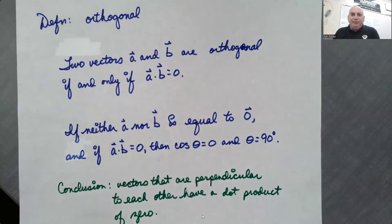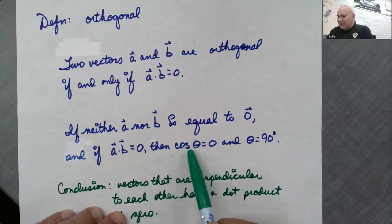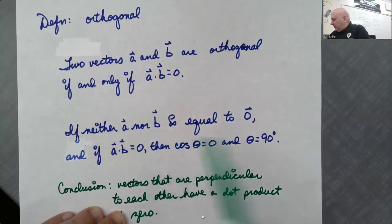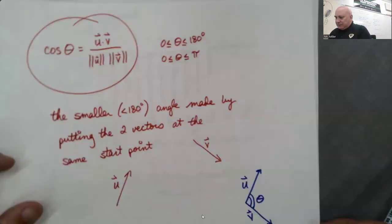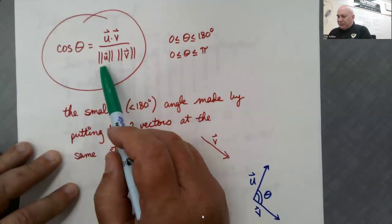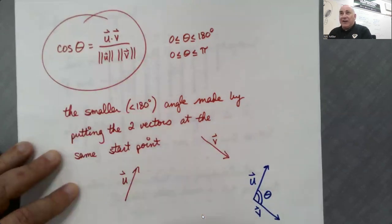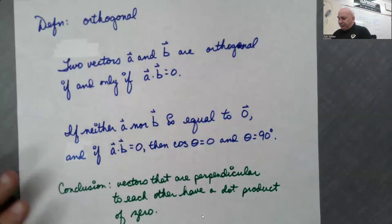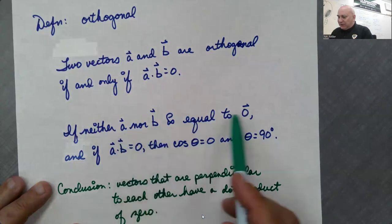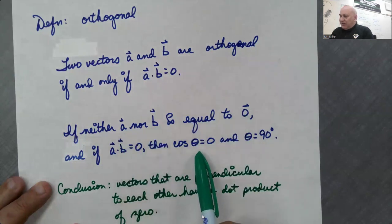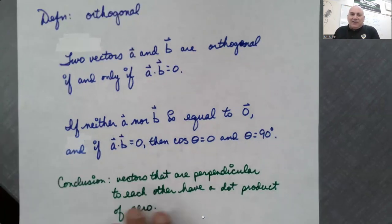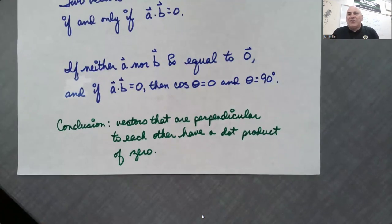Two vectors are orthogonal if their dot product is zero. If the dot product is zero, then going back to that formula, cosine theta must equal zero. If neither vector is the zero vector, zero divided by some quantity is zero, and cosine theta equals zero at 90 degrees. So if the dot product is zero and neither vector is the zero vector, then theta is 90 degrees — meaning vectors that are perpendicular to each other have a dot product of zero.